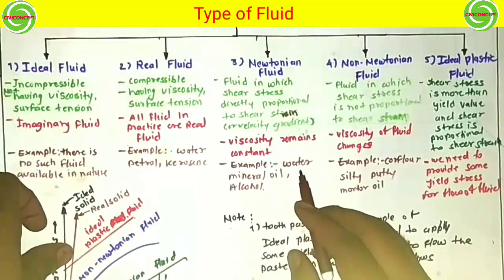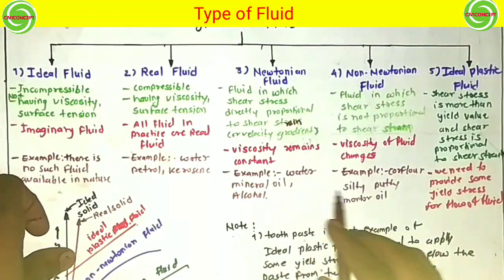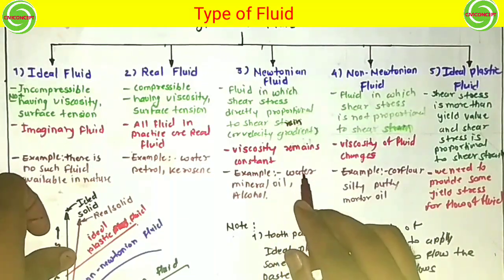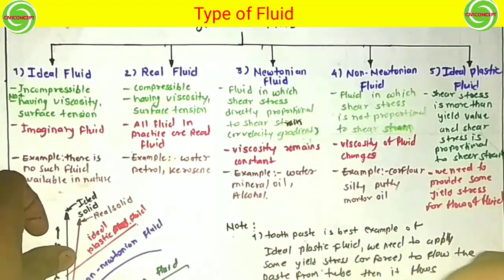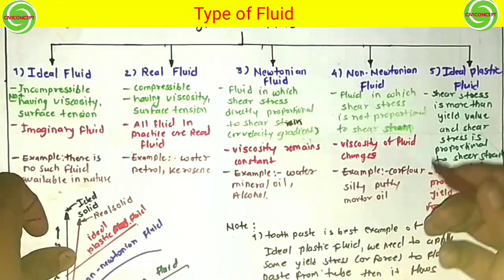The examples of Newtonian fluid are water, mineral oil, and alcohol. These fluids show no change in viscosity when they are flowing.